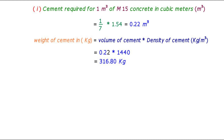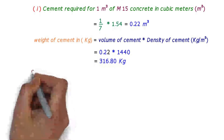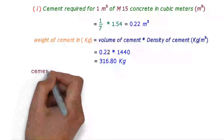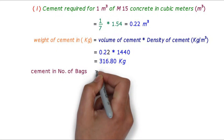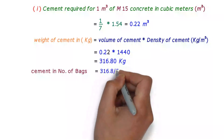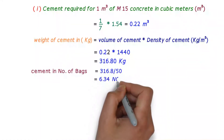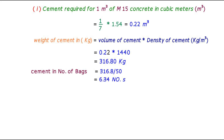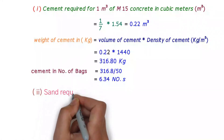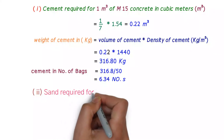We are converting the weight of cement into number of bags. Cement in number of bags equals total weight of cement divided by weight of a single cement bag, that is 316.80 divided by 50, which equals 6.34 bags.